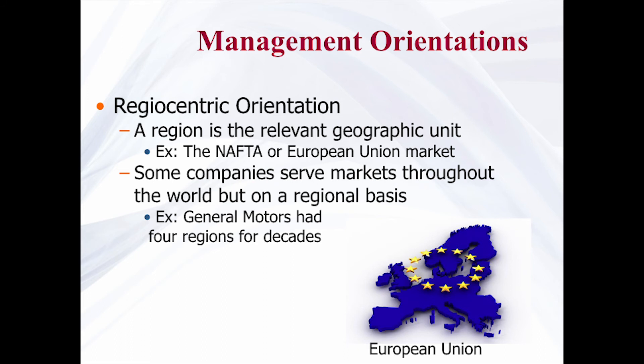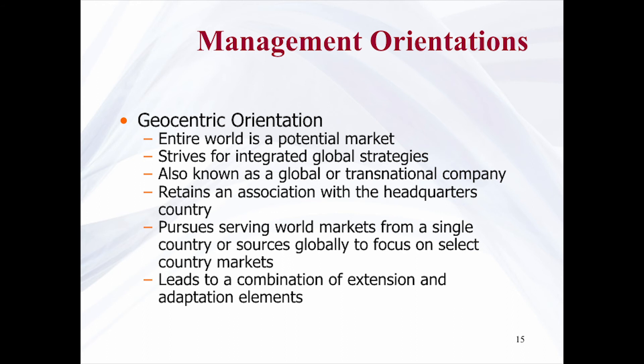In regionocentric orientation, a region is the relevant geographic unit, for example NAFTA or the European Union market. Some companies serve markets throughout the world but on a regional basis, for example General Motors. Geocentric orientation assumes that the entire world is a potential market and strives for integrated global strategies. These companies are also referred to as global or transnational companies. They retain association with the headquarter company and pursue serving the world market from a single country or source globally to focus on select country markets. This leads to a combination of extension and adaptation elements.